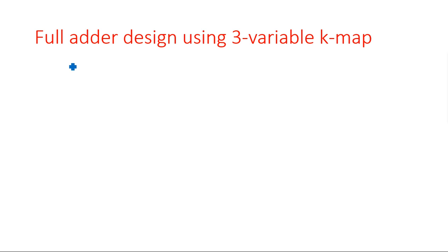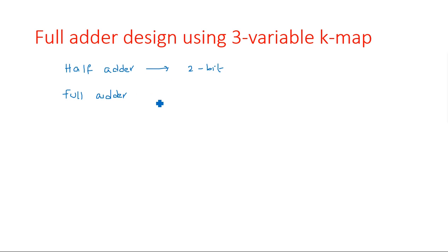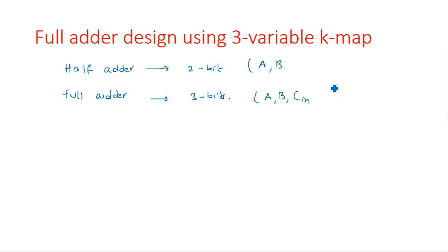The full adder has three inputs. There are two adders: half adder and full adder. A half adder can add two bits of data, and a full adder will add three bits of data. The full adder has inputs A, B, and Cin — where Cin is the carry input from the previous addition. The half adder has A and B as inputs, and Sum and Carry as outputs.